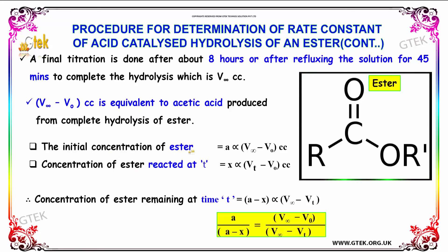The initial concentration of ester (a) is directly proportional to V∞ - V₀ cc. The concentration of ester remaining at time t is (a - x), which is directly proportional to V∞ - Vₜ. So a/(a - x) is given by (V∞ - V₀)/(V∞ - Vₜ).